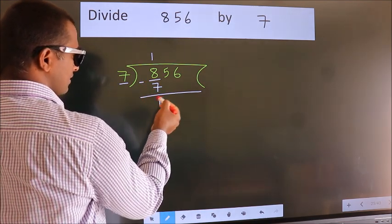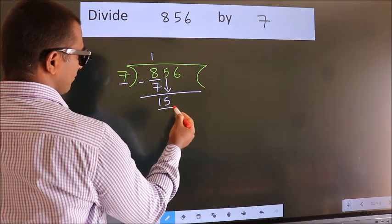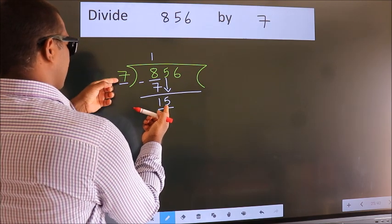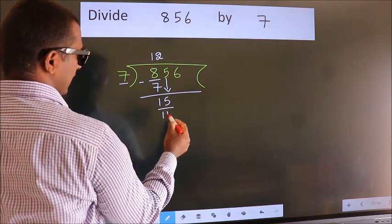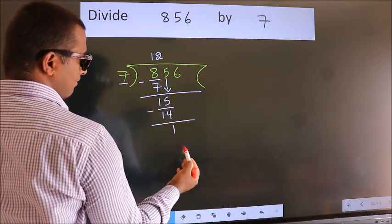After this, bring down the next number. So, 5 down. So 15. A number close to 15 in the 7 times table is 7 twos, which is 14. Now we subtract. We get 1.